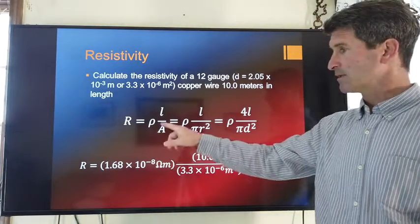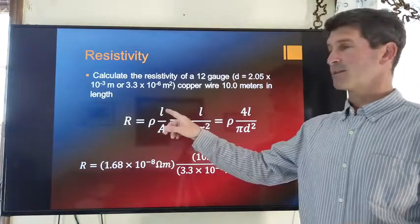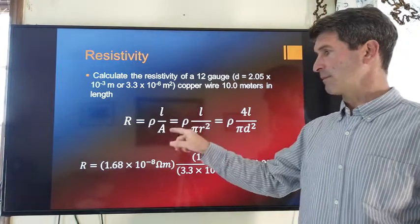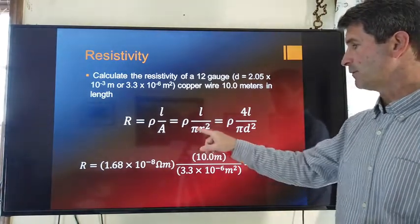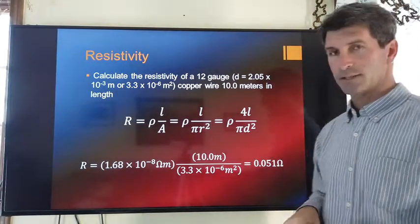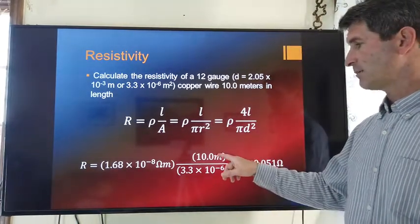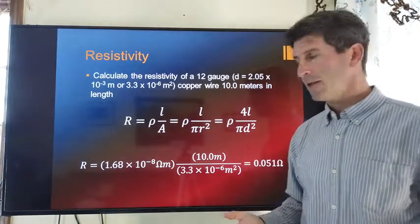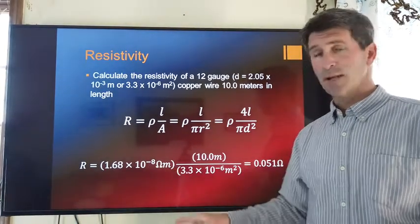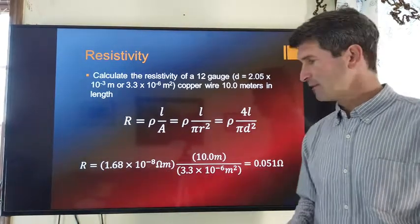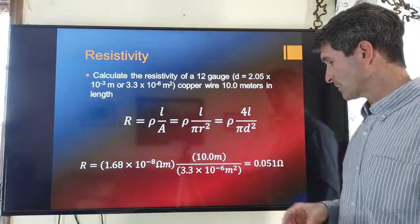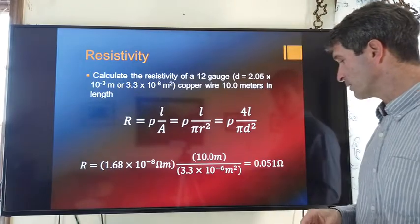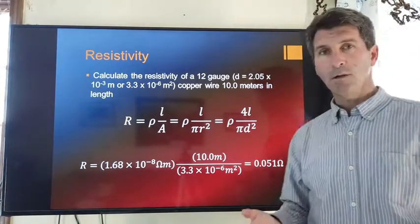Now, we've already done this calculation for you for the area. So, I'm going to substitute that down right here. 10 meters of wire, about 30 feet. Copper has a really low resistivity. And, we see that that type of wire, 12 gauge wire, has a resistance of about 0.051 ohms.